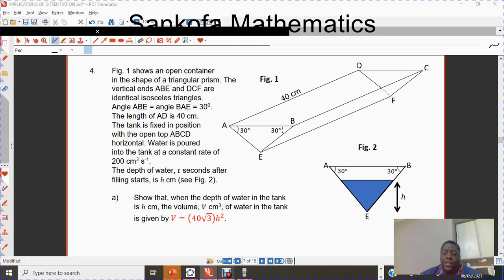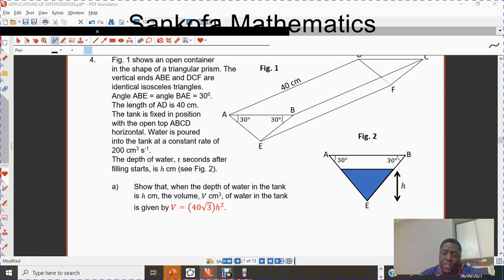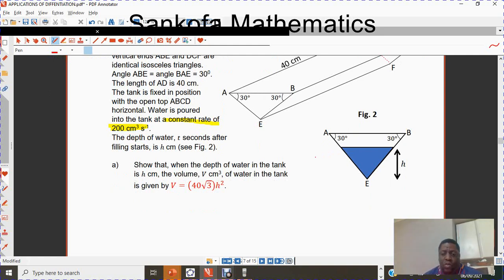The depth of water t after filling starts is h cm. We are supposed to show that when the depth of water in the tank is h cm, the volume is given by this particular equation. So there's a number of things that we need to establish. Let's first look at what we know. If I highlight one important factor that will come in handy later, it's the constant rate that water is poured in, 200 cm³ per second. So dV/dt equals 200. You get that from the units: cubic cm is volume and seconds is time. Let's look at what is necessary.